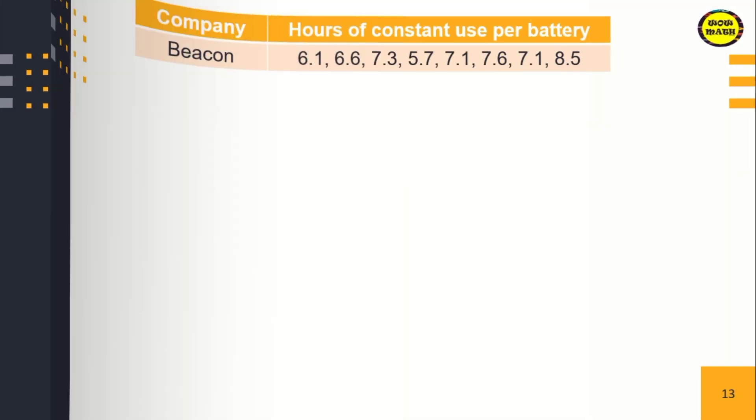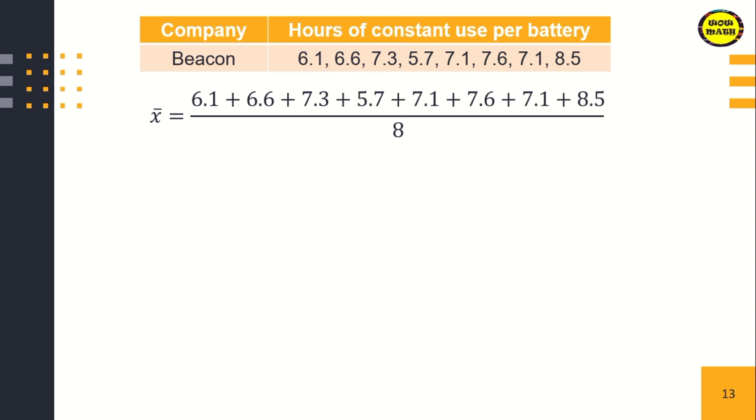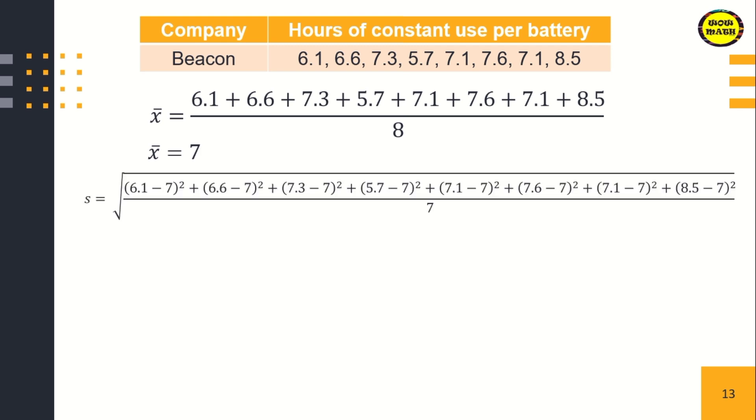For the third company, again, the mean value is the same. Add and divide by 8. Then substitute into our formula. From the start, subtract from the mean value. So (6.1-7)² plus up to (8.5-7)². That's 5.38 divided by 7. That equals 0.88 hours. You can check the answer using your scientific calculator.